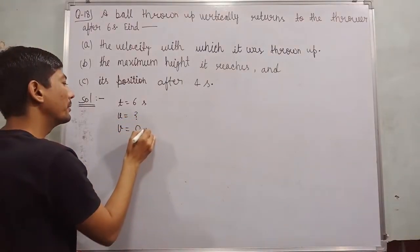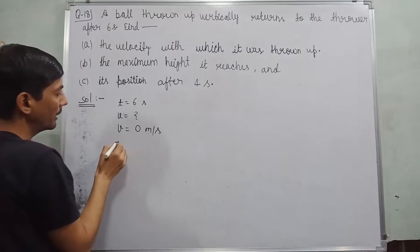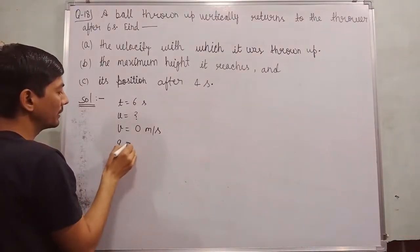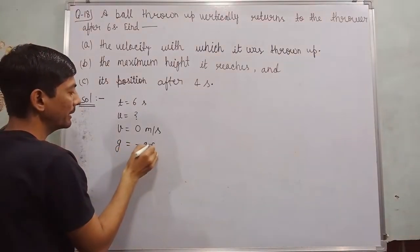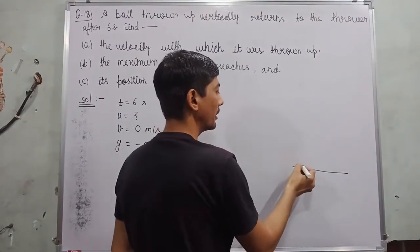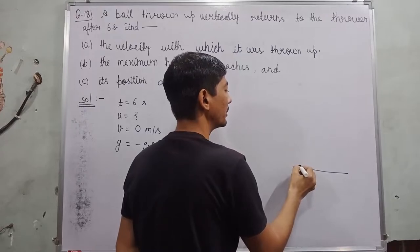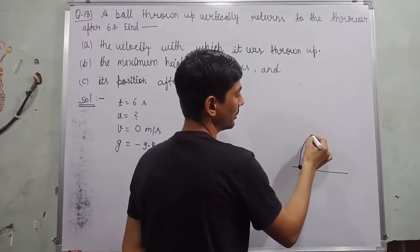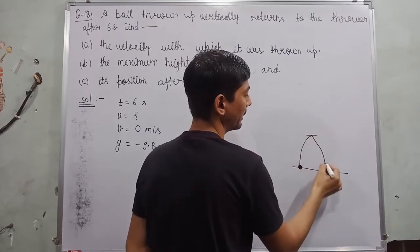v is equal to 0 meter per second and the value of g is minus 9.8 meter per second square. This is our ground.